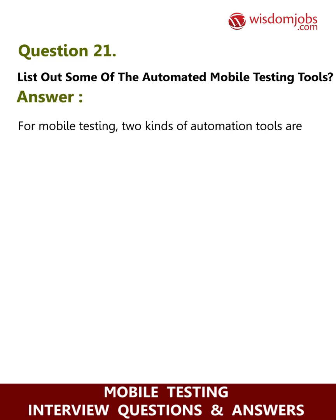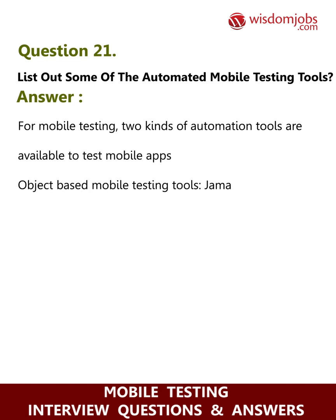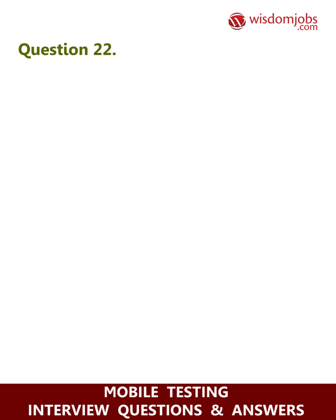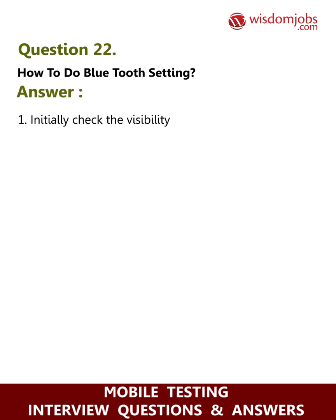Question 21: List out some automated mobile testing tools for mobile testing. Answer: Two kinds of automation tools are available to test mobile apps. Object-based mobile testing tools include Jama Solution and Ranorex. Image-based mobile testing tools include Routineboard and Eggplant Equally.